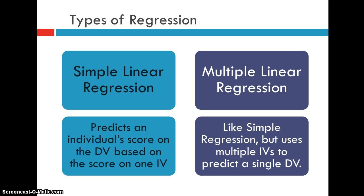So there's a couple of types of regression. We are going to focus on simple linear regression, which is when you have a single independent variable, and you use that to predict the dependent variable. So we're predicting an individual score on the dependent variable based on one independent variable score.